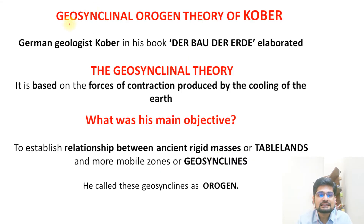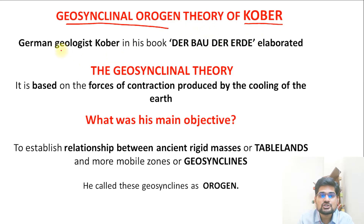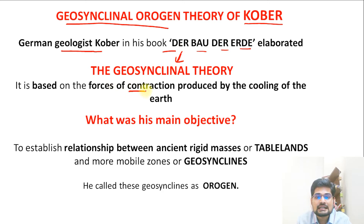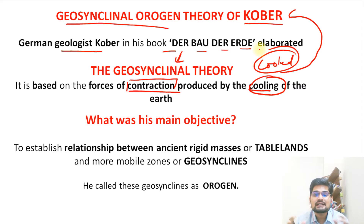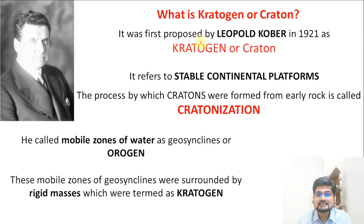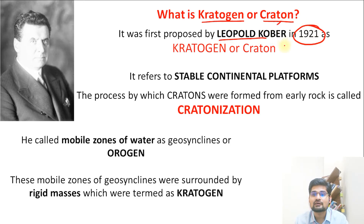When we talk about geosynclinal theory, one name keeps coming up: the scientist Kober. He was a German geologist who discussed this theory in his book 'Der Bau der Erde.' His theory is based on the forces of contraction produced by the cooling of the earth. As the earth cooled gradually, it contracted, and objects that were far apart came together. The concept of kratogen — or craton — was first proposed by Leopold Kober in 1921.